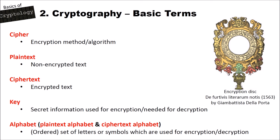Then we have the plaintext, which is a non-encrypted text that we want to encrypt. Then we have the ciphertext, which is the result of applying a cipher on a plaintext — and the ciphertext is of course encrypted. Then we have the key, which is some kind of secret information used for encryption and needed for decryption. The key is the only thing that we keep secret. We don't keep the cipher secret, and the crypto algorithm has to be secure even with an attacker knowing the complete cipher itself, but not having the key.